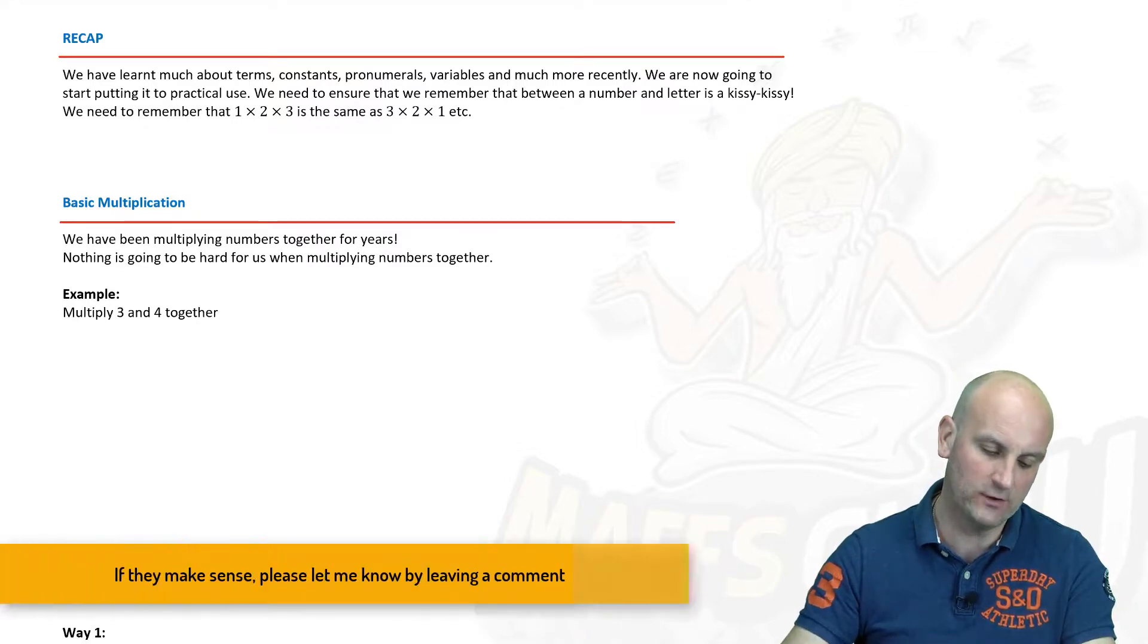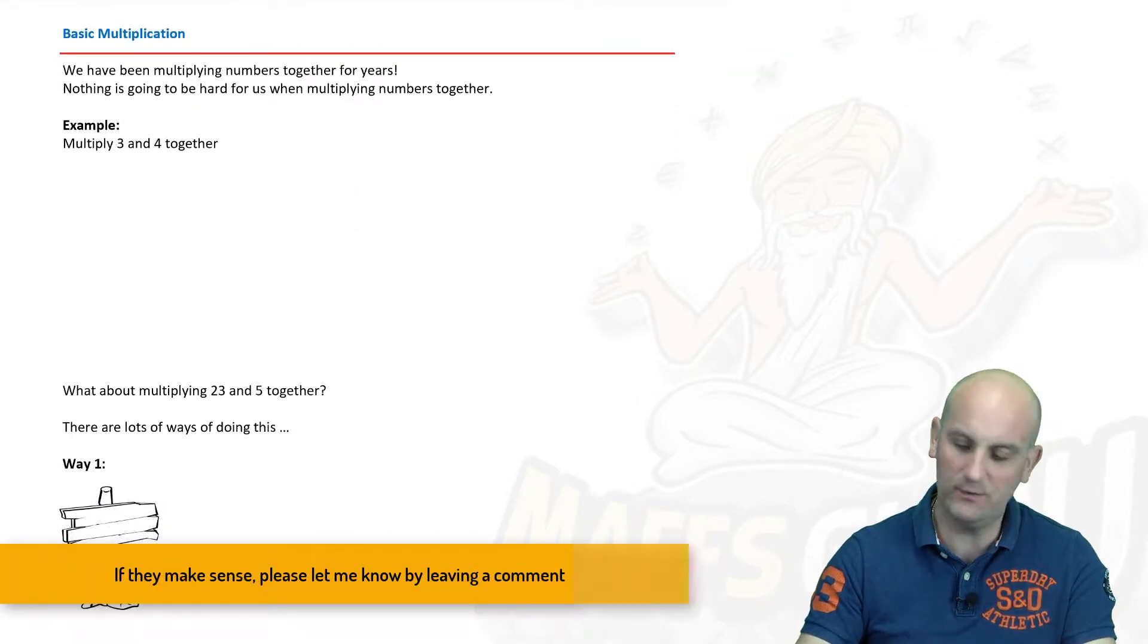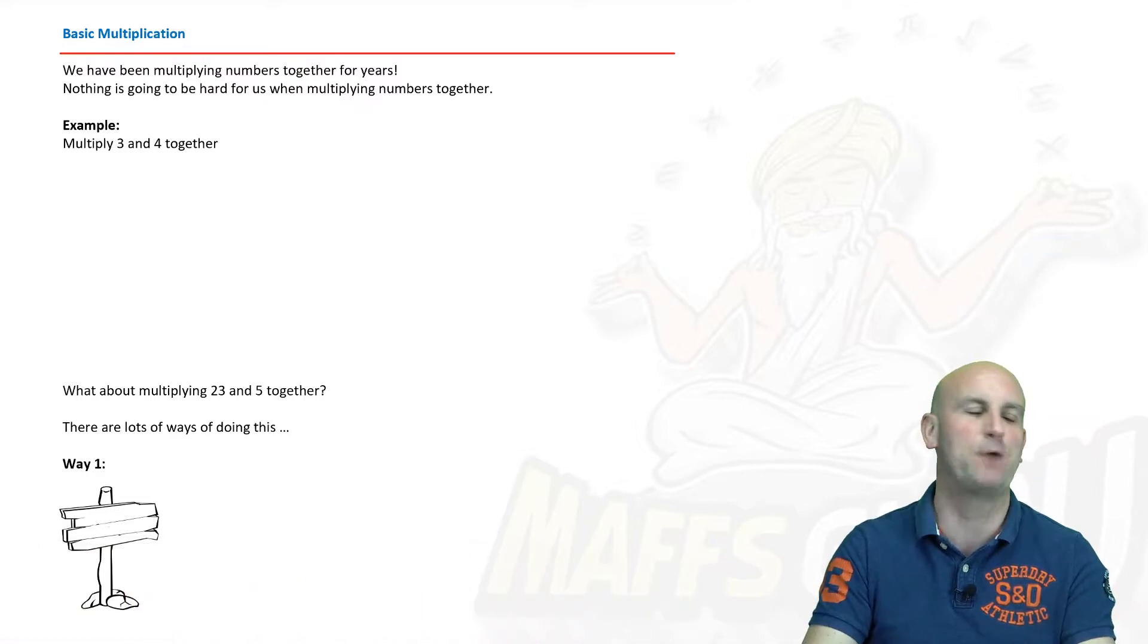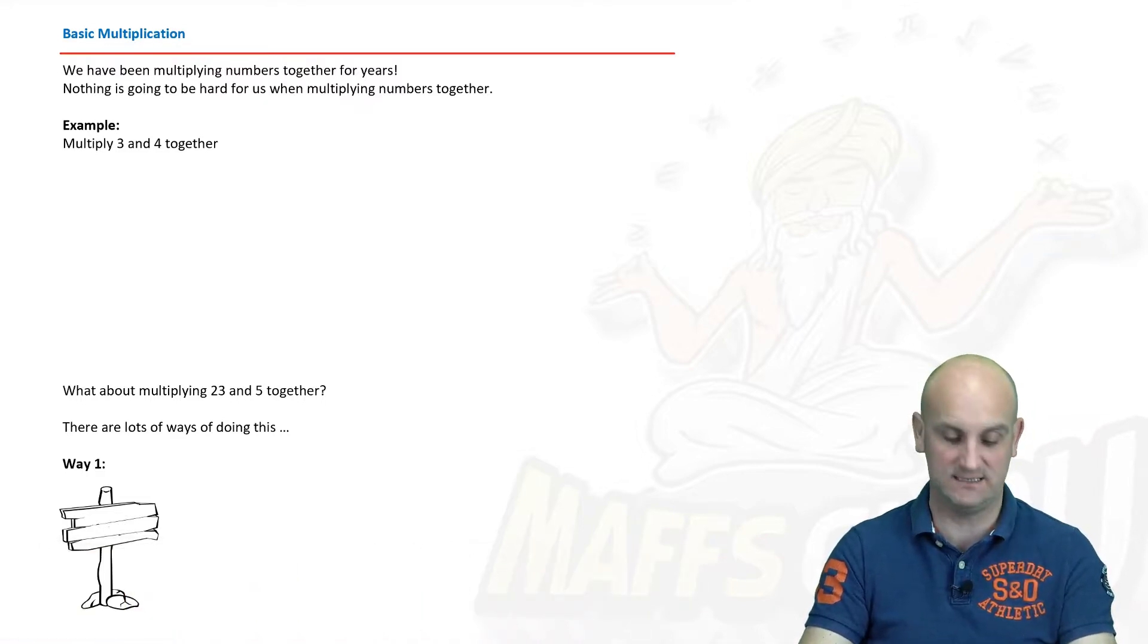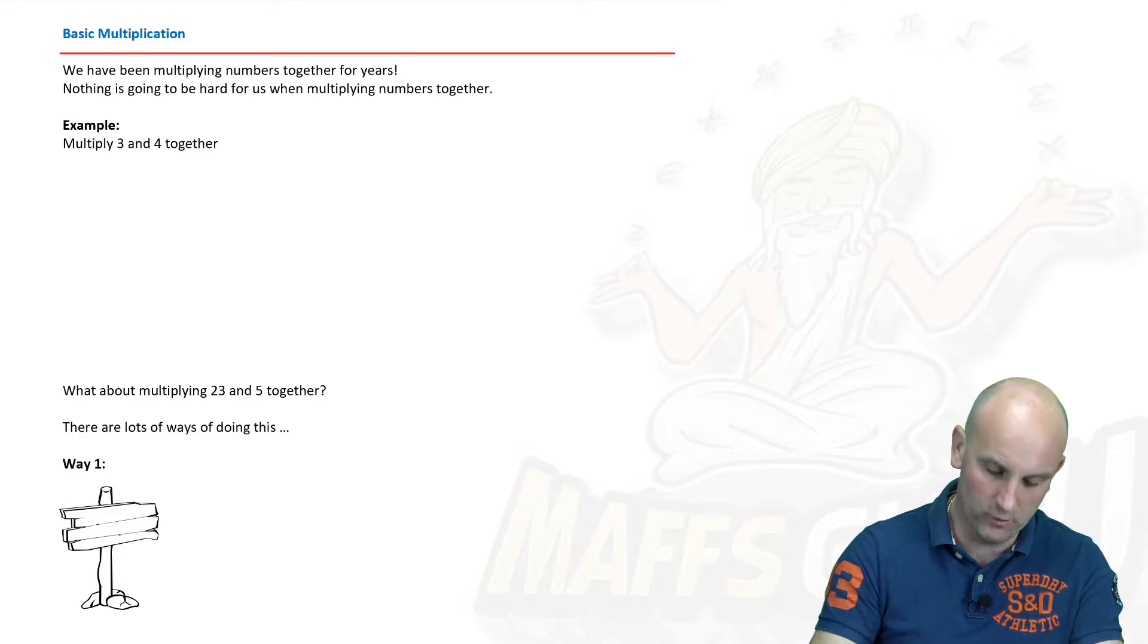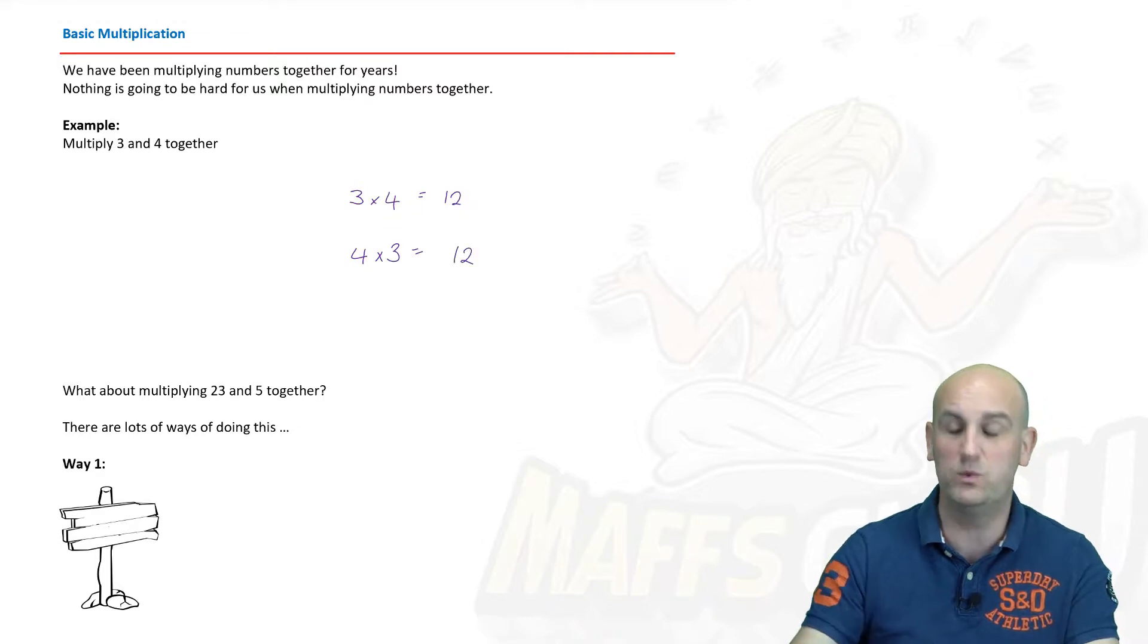Okay, so let's have a look at basic multiplication. Now we've been multiplying since we were at primary school. It wasn't particularly difficult, is it? 3 times 4. I'm going to multiply that together. 3 times 4 is 12. We also know that 4 times 3 is 12 as well. Okay, that's really, really important. Don't forget to know this stuff.